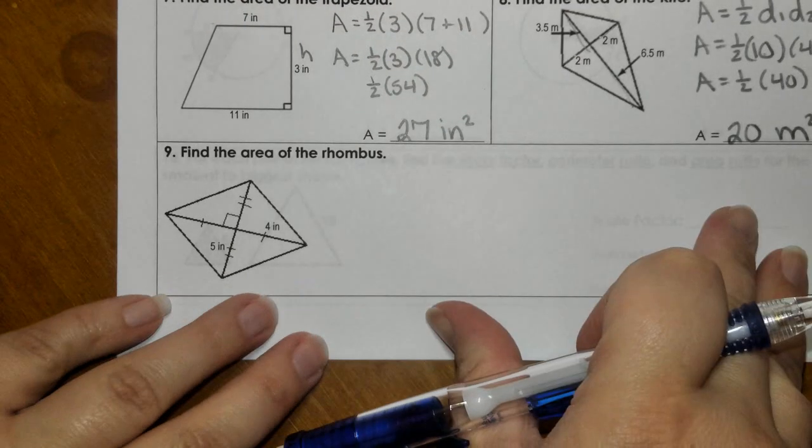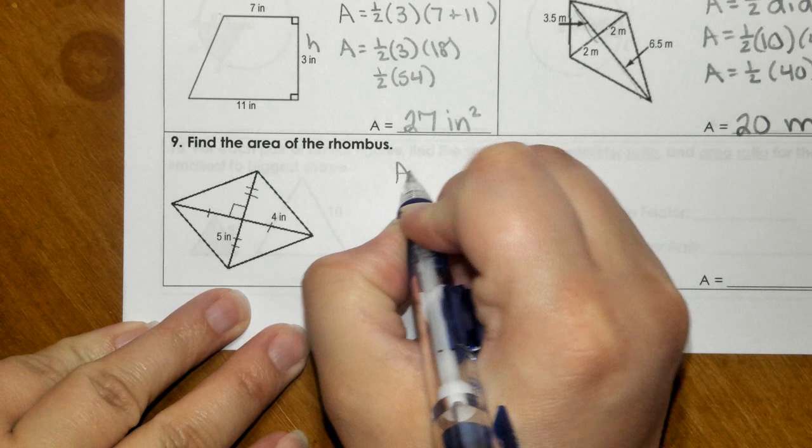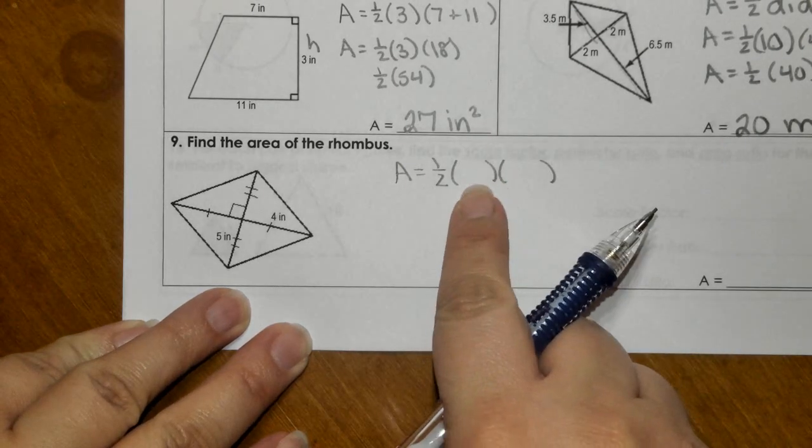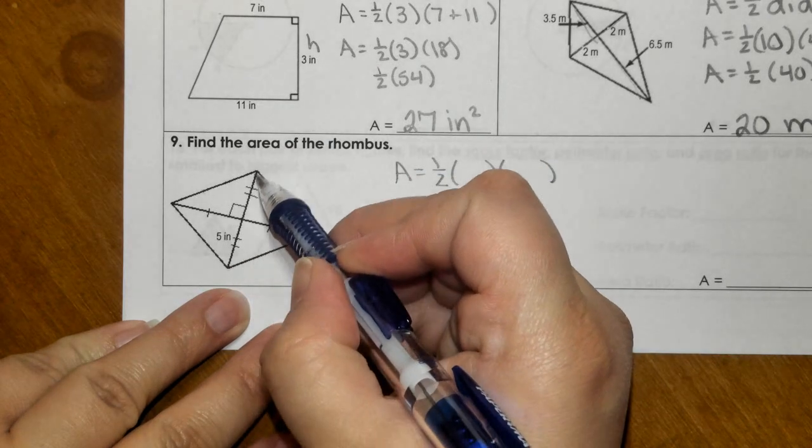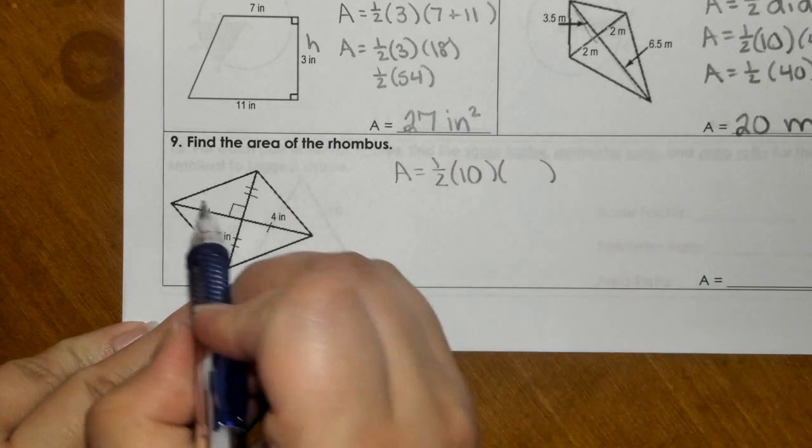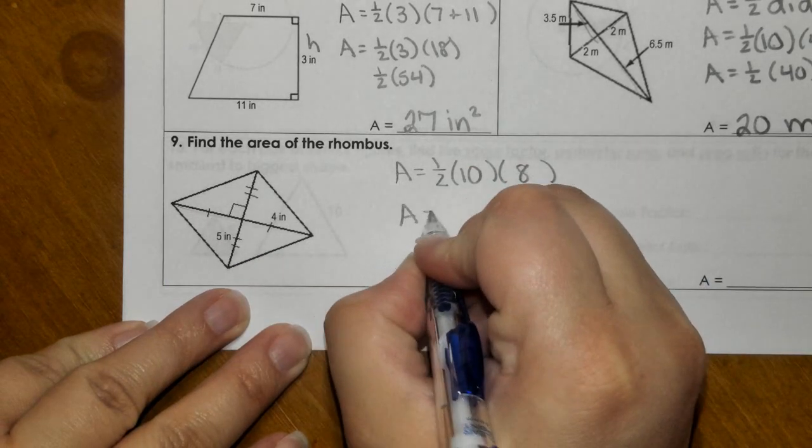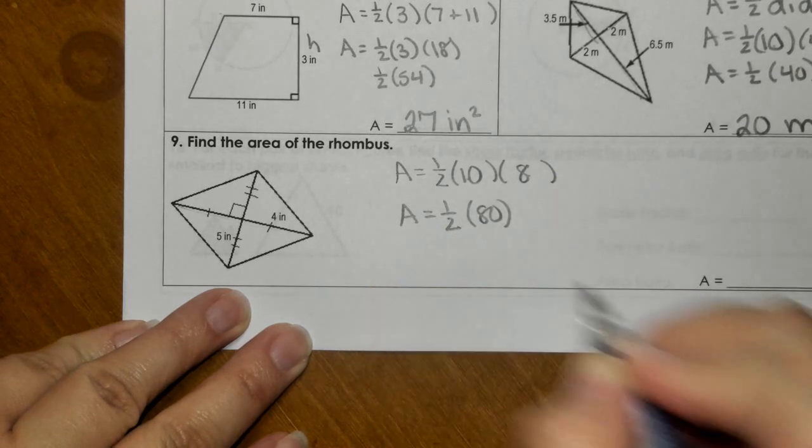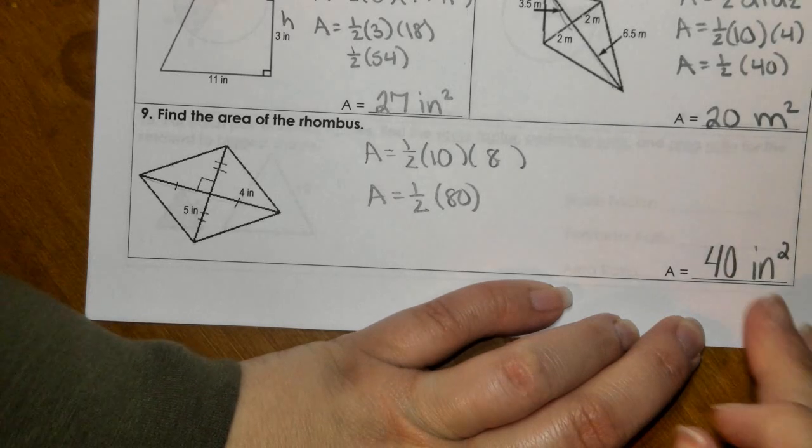Then down here for number nine, we're going to do the same formula. So one half times diagonal one times diagonal two. So diagonal one, we've got 5 plus 5 is 10. Diagonal two, 4 plus 4 is 8. So here, 10 times 8 would be 80. We take half, and that would be 40 inches squared.